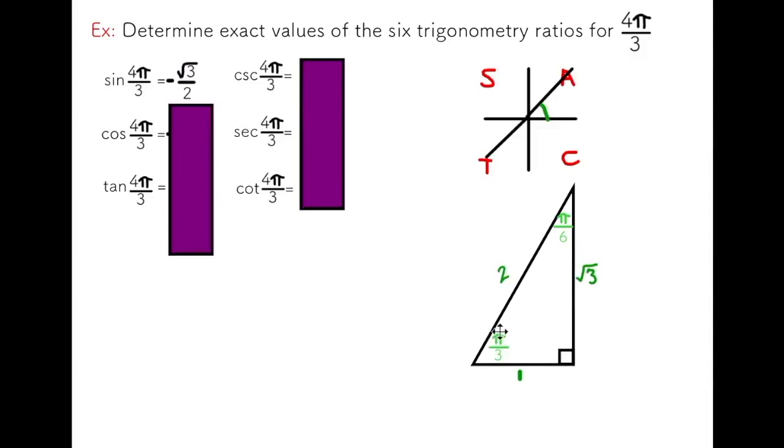Same goes for cosine. I'm going to look at pi over 3. I'm going to use the adjacent over hypotenuse. But again, because I'm in this quadrant, it must be negative. So I should have negative 1 over 2.